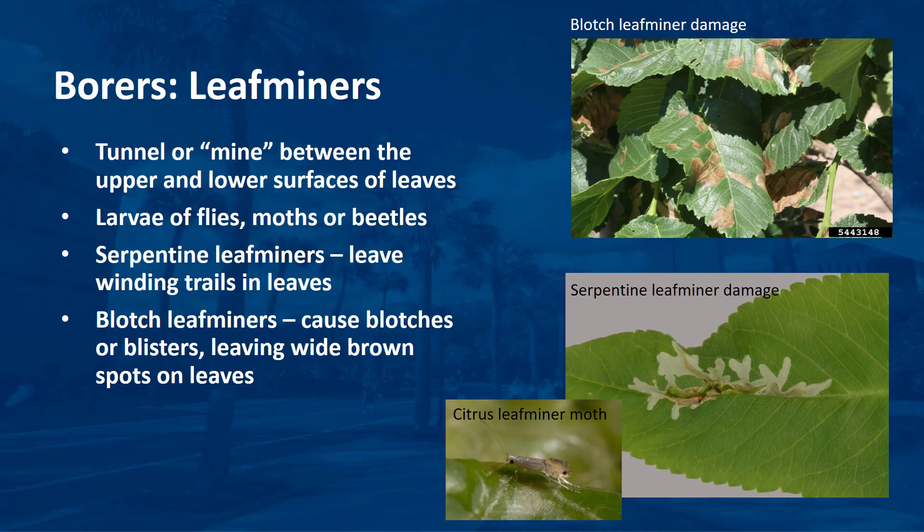Leaf miners tunnel or mine between the upper and lower surfaces of leaves. These insects can be serious pests of commercial flowers, especially lantana, chrysanthemums, bedding plants, and citrus. Leaf miners have very short lives; therefore, they spend little time actually causing damage. Leaf miners are the larvae of flies, moths, or beetles — flies are the most common. The leaf miner that does the most damage in Florida is the serpentine leaf miner, which leaves winding trails in the leaves. The blotched leaf miners cause blotches or blisters instead of serpentine patterns — blotches are wide brown spots on leaves.